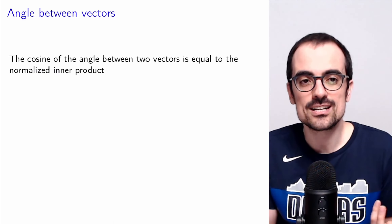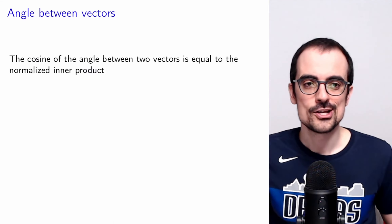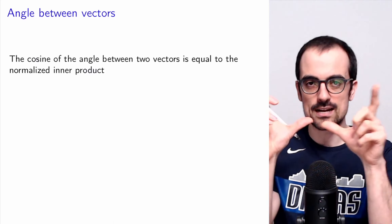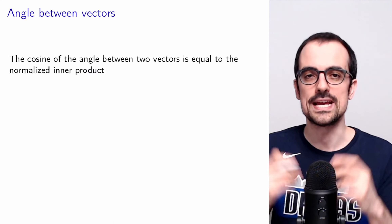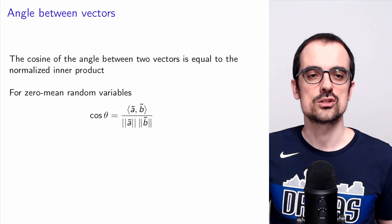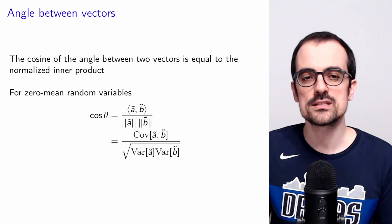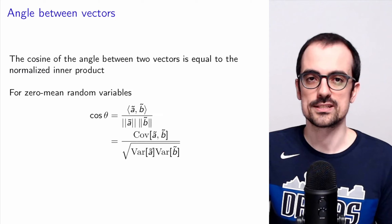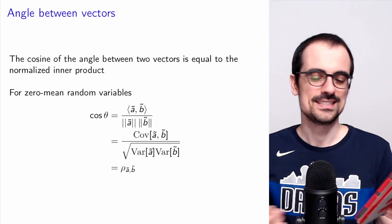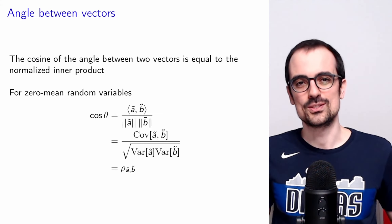We can also define an angle between vectors, and in particular the cosine of an angle between vectors. The cosine of the angle between two vectors equals the inner product normalized by their lengths. In the case of random variables, the inner product is the covariance, and we divide by the lengths which are the standard deviations. This quantity is the correlation coefficient between the two random variables.